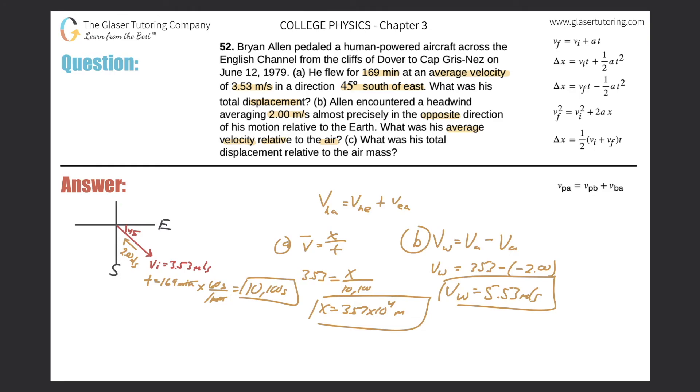And then it says what was his total displacement relative to the air mass. So now all we have to do is use this velocity now to calculate that. So for letter C, let's place that over here. So his average velocity then is displacement over time. And the velocity that we're now using is 5.53 equals x over the same time of 10,100 seconds. So now x should simply be 5.53 times 10,100. And we get a value of 5.59 times 10 to the fourth meters. So that would then be his displacement relative to the air mass.